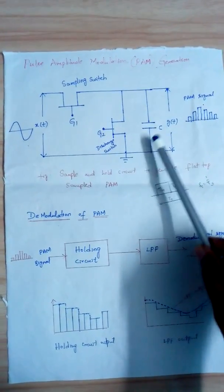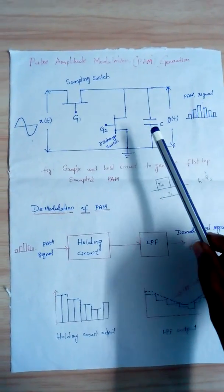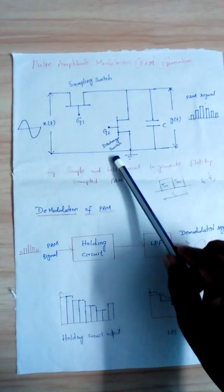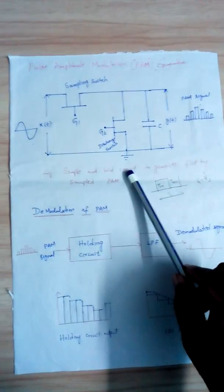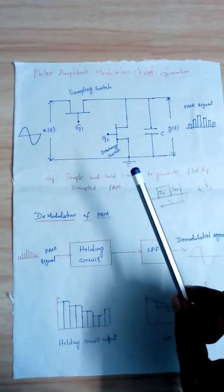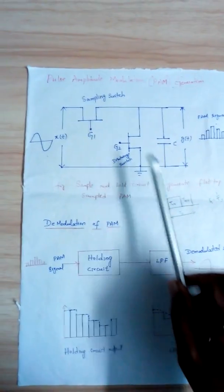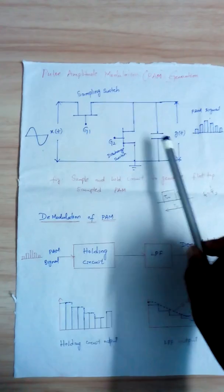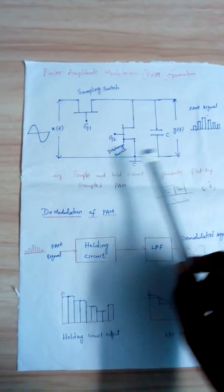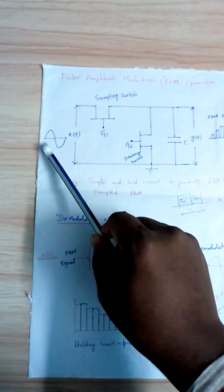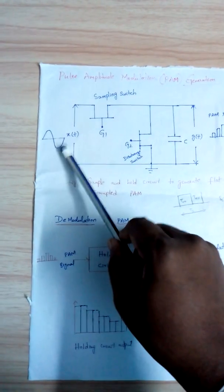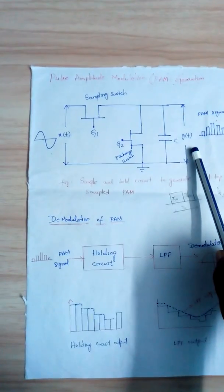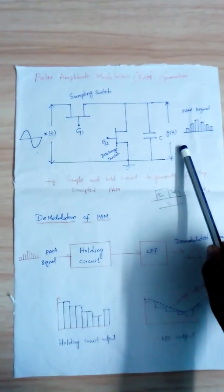This is the circuit used to generate the PAM signal, called a sample and hold circuit. It mainly consists of two switches: one is the sampling switch and another is the discharge switch, along with a capacitor C. The input X(t) is a continuous time signal, and the output G(t) is taken across the capacitor C.